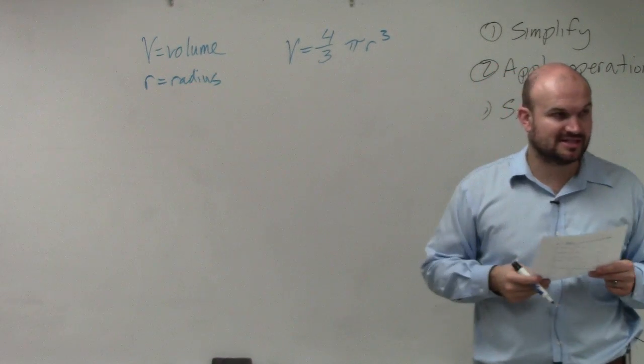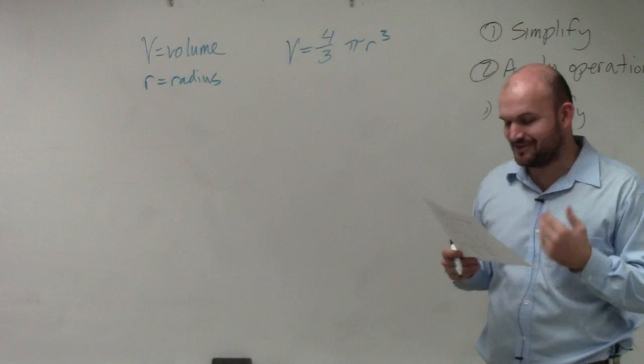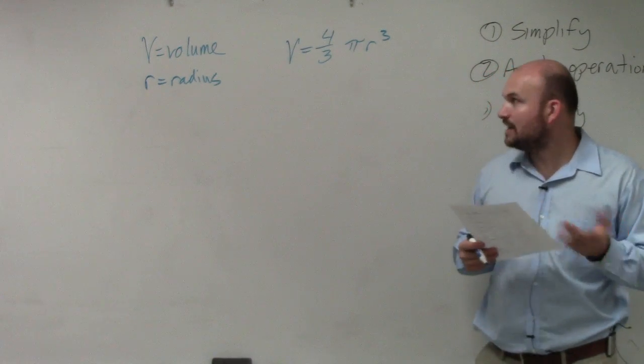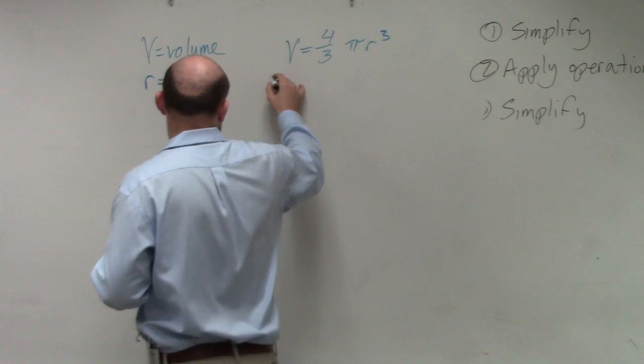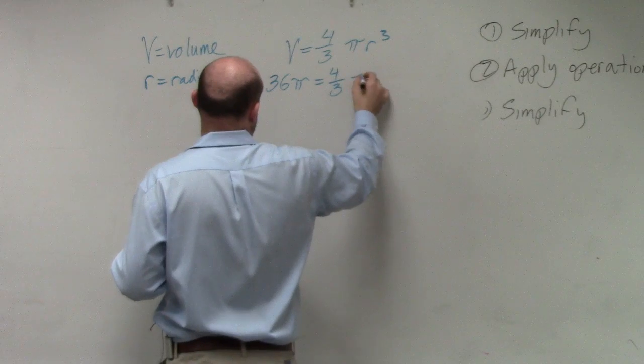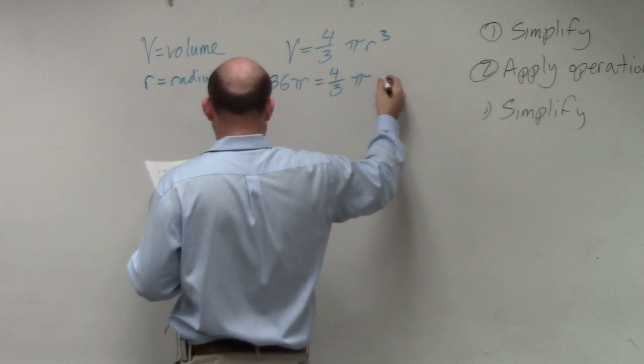With the volume is 36 pi. So what does 36 pi represent? Volume. So does it make sense I do this: 36 pi equals 4 thirds pi r cubed.